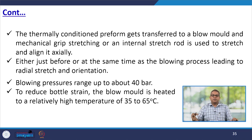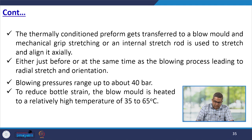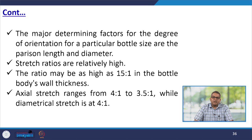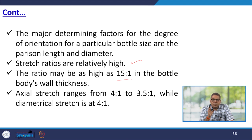The thermally conditioned preform is transferred to a blow mould and a mechanical grip or internal stretch rod is used to stretch and align it axially, either just before or simultaneously with the blowing process, leading to radial stretch and orientation. Blowing pressure ranges up to about 40 bar. The blow mould is heated to 35–65°C to reduce bottle strain. The major determining factors for the degree of orientation are the parison length and diameter; stretch ratios may be as high as 15:1 for bottle wall thickness, with axial stretch of 3.5:1 to 4:1 and diametrical stretch of 4:1.